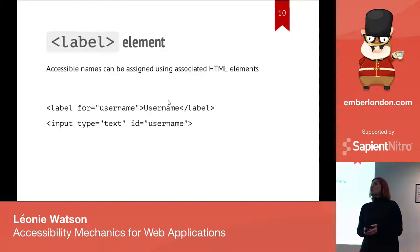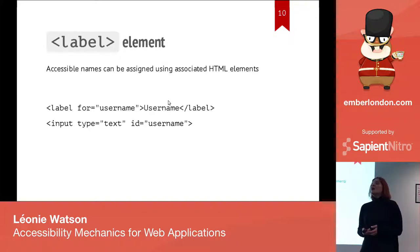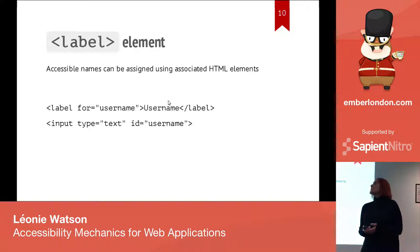You can also get an accessible name by association with another element. If you use a standard text input and associate a label element with it using the for/id attribute pairing, the text content of the label becomes the accessible name for the form field. If you're using a speech recognition tool, you could just say 'focus on the username field' — call it by name, just like people do.